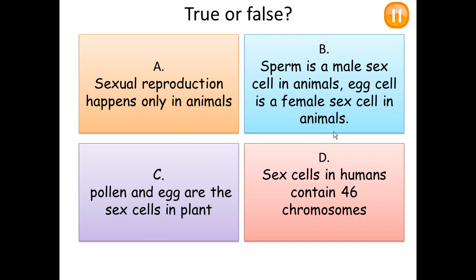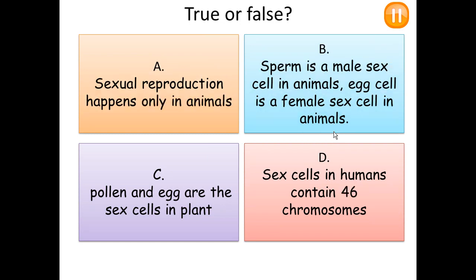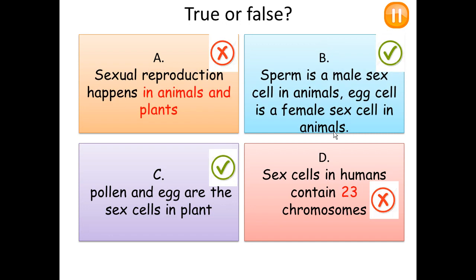Here is a true or false task. Some statements are true and some are false — pause the video and go through each one. First: sexual reproduction happens only in animals — this is FALSE, because fertilization also happens in plants. Second: sperm is a male sex cell in animals and egg cell is a female sex cell in animals — TRUE. Third: pollen and egg are sex cells in plants — TRUE. Fourth: sex cells in humans contain 46 chromosomes — FALSE, because sex cells contain only 23 chromosomes.